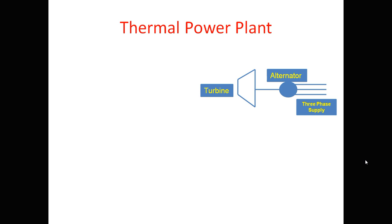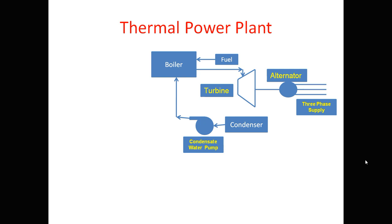The turbine has to be rotated. It can be rotated by giving some pressure on it. As this is a thermal power plant, by using coal or heat energy we can get the pressure on the turbine. That pressure is obtained by using the boiler, where fuel is burned.